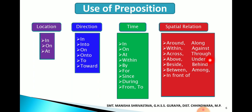'Under' यानि के नीचे — जब नाउन का दूसरे नाउन से direct संपर्क नहीं होता, तब use होता है under. Under का opposite होता है over. फिर है 'beside' याने बाजू में, 'behind' याने पीछे, 'between' याने दो के बीच, 'among' याने बहुत सारी चीजों के बीच, 'in front of' याने सामने. इन prepositions का sentences में use कैसे करेंगे और इनकी position कैसे आएगी, वो हम देखते हैं next slide में.